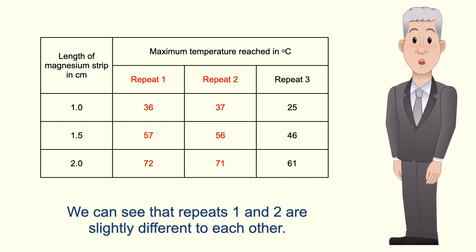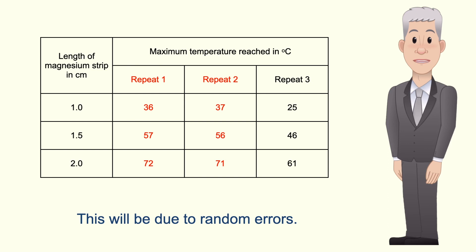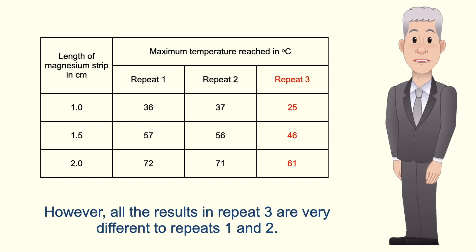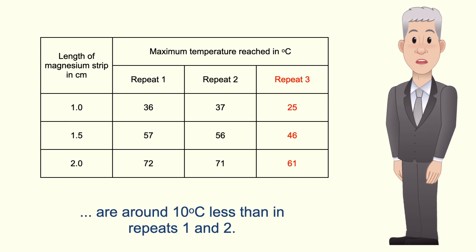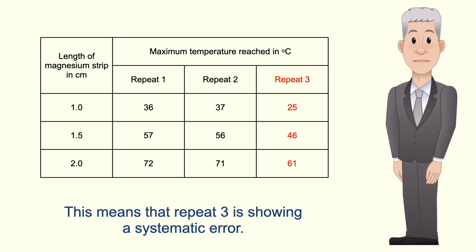Now we can see that repeats 1 and 2 are slightly different to each other and this will be due to random errors. However, all the results in repeat 3 are very different to repeats 1 and 2. In all cases, the temperatures reached in repeat 3 are around 10 degrees celsius less than repeats 1 and 2. This means that repeat 3 is showing a systematic error.